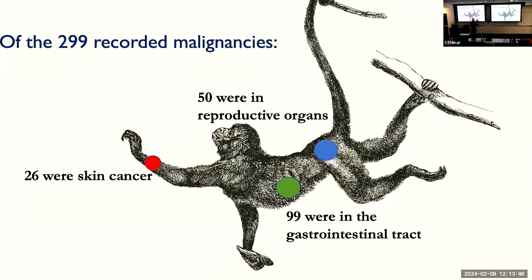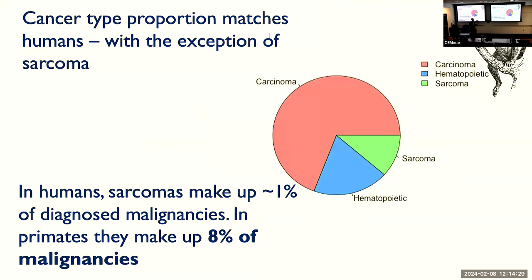Once that's done, we can take a step deeper and look at whether, given our phylogenetic evolutionary relationship among primates, we share the most common types of cancer. In comparative medicine, one of the driving questions is what about the human condition — what about the Western human condition — describes the commonalities of our maladies. If we compare common cancer types between us and primates, we begin to get an idea of whether what drives our most common cancers is fundamentally a mismatch in environment, or something else. The first breakdown is just by broad cancer types: carcinomas or solid tumors, blood cancers or hematopoietic cancers, and sarcomas.